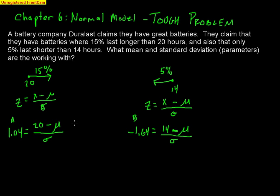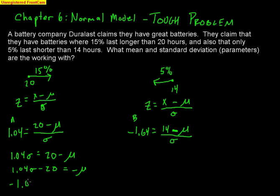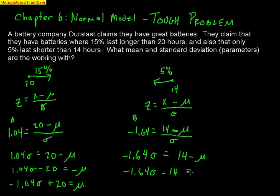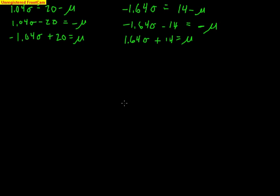So that's negative 1.64 going into the second equation. Now I need to solve both equations for mu. For the first one: multiply both sides by sigma to get 1.04·σ = 20 − μ; subtract 20 and divide by negative, giving: −1.04σ + 20 = μ. For the second one: multiply by sigma to get −1.64σ = 14 − μ; subtract 14 and divide by negative, giving: 1.64σ + 14 = μ. Since both equations come from the same data, those mu values must be the same — so I can set them equal to each other.